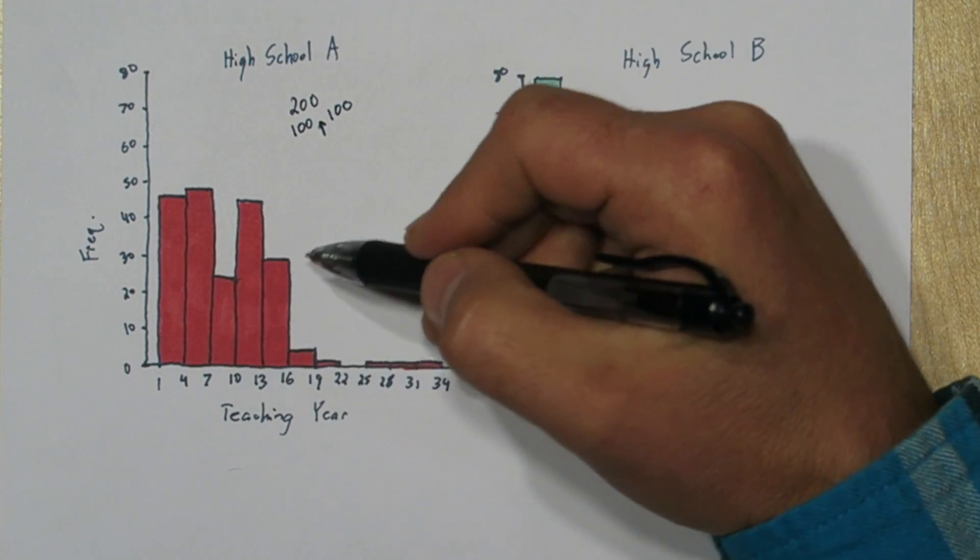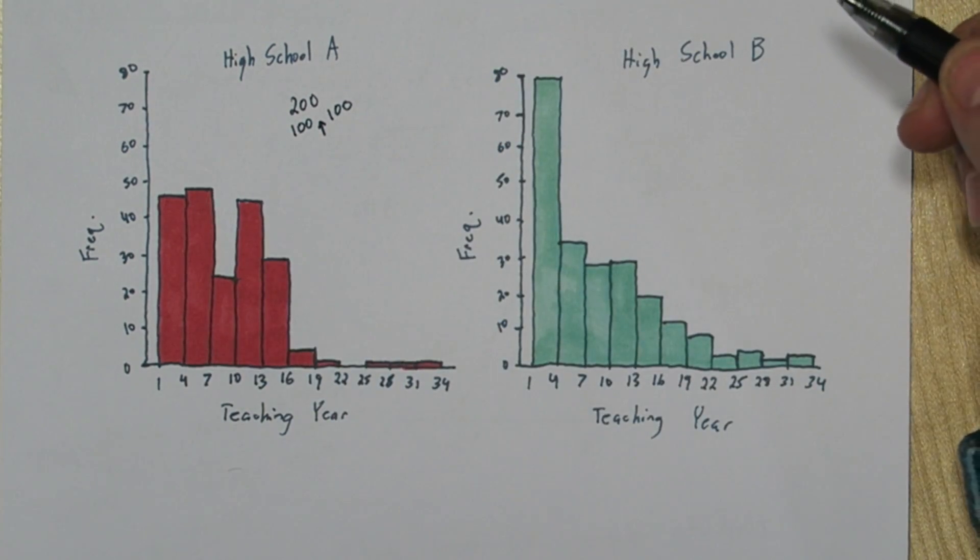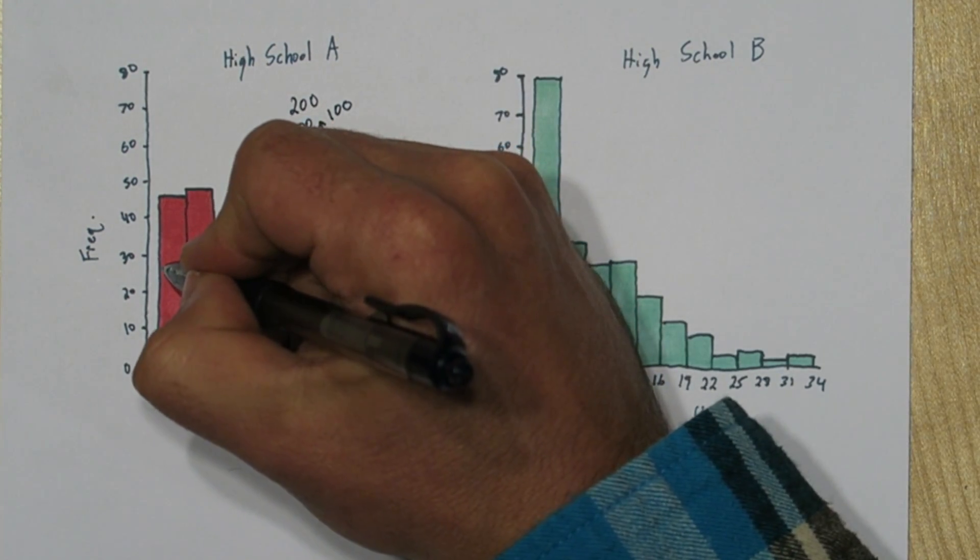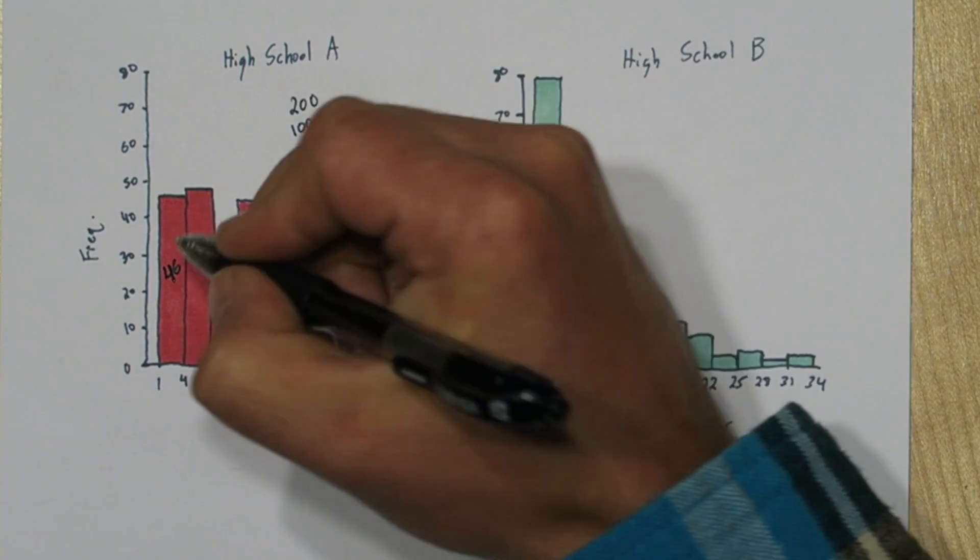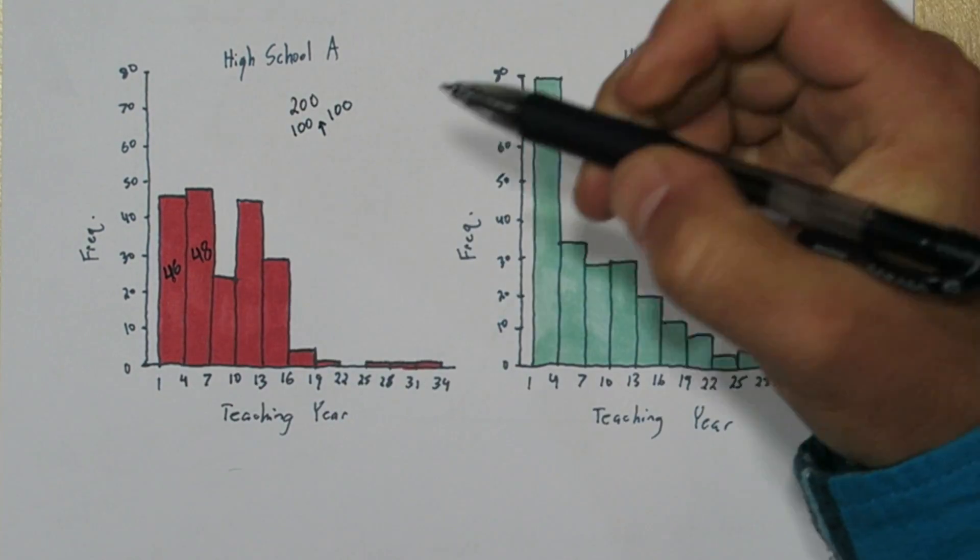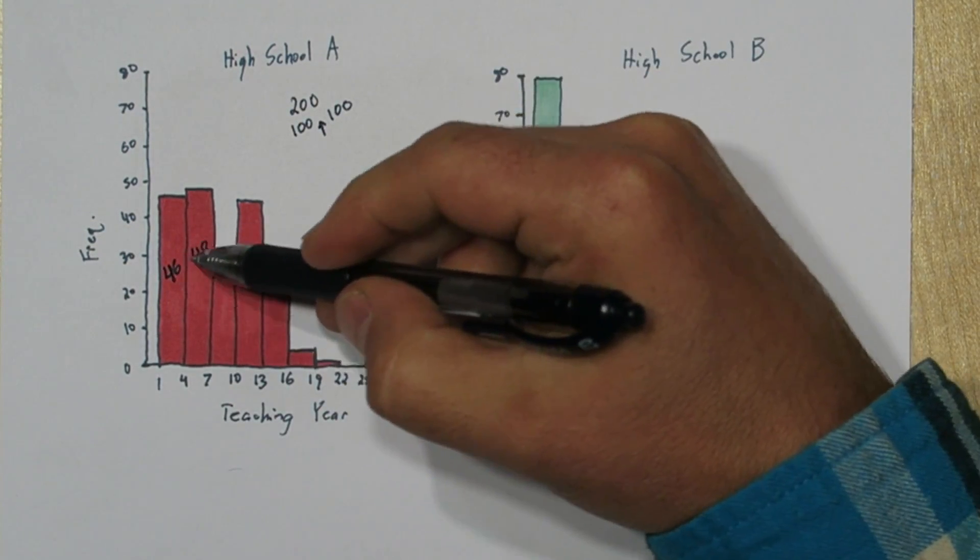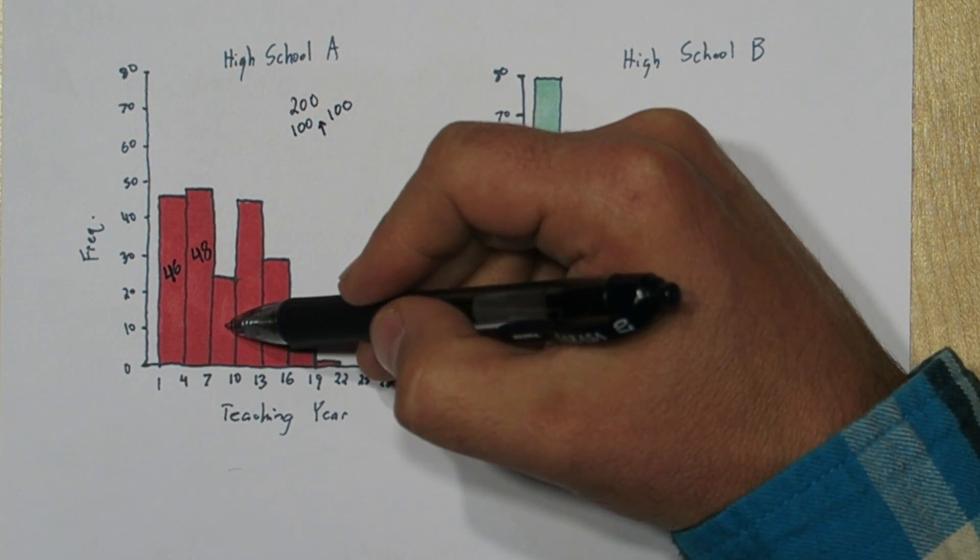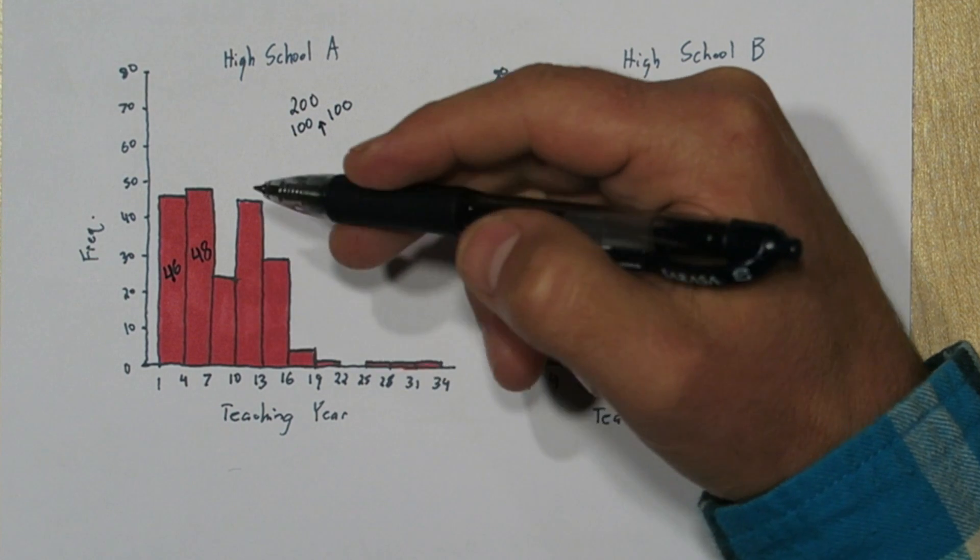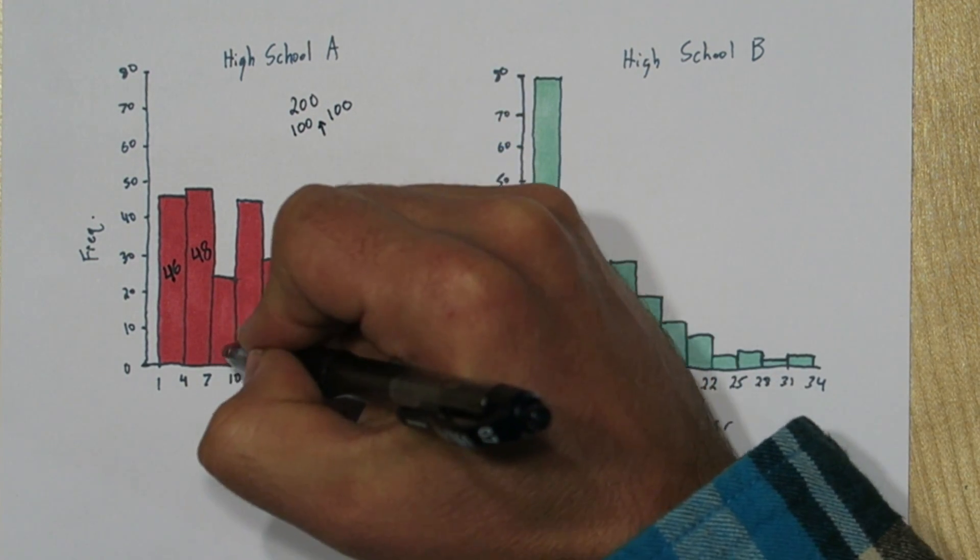They gave us a pretty detailed histogram. Looking at it closely, I think the frequency of this bin right here is 46, and this one is 48. So these two numbers don't get us to 100, but this next one would certainly contain the 100th and 101st value. So the median is somewhere in here.